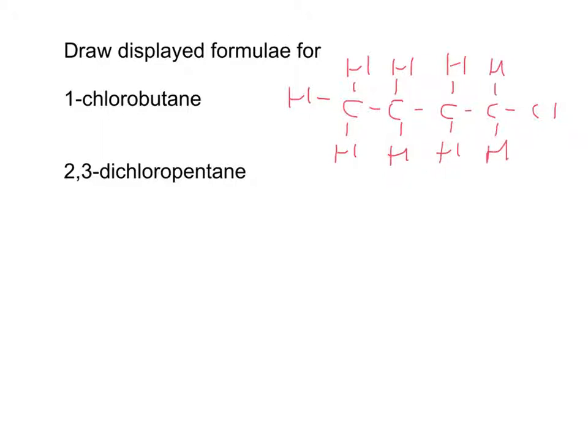And finally, 2,3-dichloropentane. This time I have got five carbon atoms. 2, 3, so I've got a chlorine on the second, and a chlorine on the third. And then I just pop on my H's, making sure that every carbon has his four bonds.